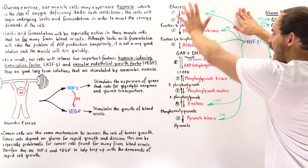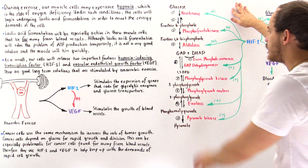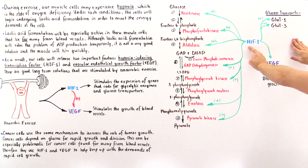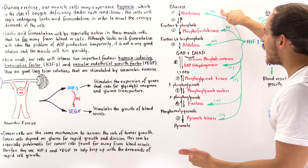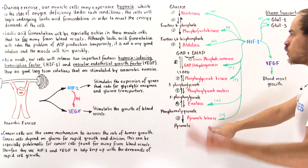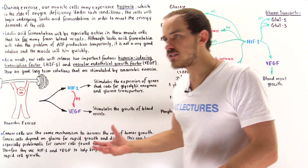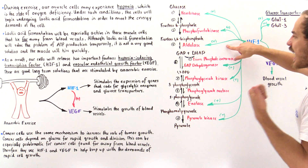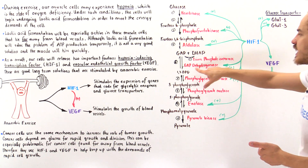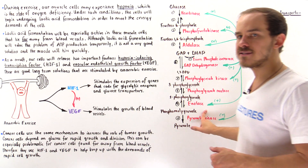Here we have the summary of the process of glycolysis, with 10 steps and 10 different enzymes. Seven of these enzymes are affected by hypoxia-inducing transcription factor 1. Hexokinase, phosphofructokinase, and pyruvate kinase — the three most important enzymes, which catalyze the irreversible steps — are all stimulated, as well as aldolase, GAP dehydrogenase (where GAP stands for glyceraldehyde-3-phosphate), phosphoglycerate kinase, and enolase.